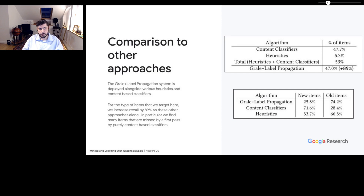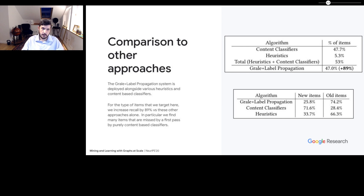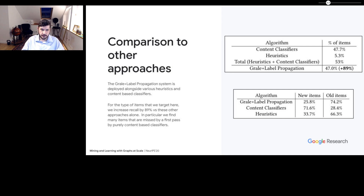To compare performance against other deployed systems, we break down items caught by each system. Content classifiers catch about half of the items, other heuristics find another 5%, so together those find about 53% of abuse. Our system using GRAIL with label propagation finds about half independently. By adding GRAIL and label propagation to the system, we're increasing recall by about 90%. Another interesting fact is that the GRAIL and label propagation system finds a lot of older items that some of these other systems were missing — about three quarters of what GRAIL finds are older items.